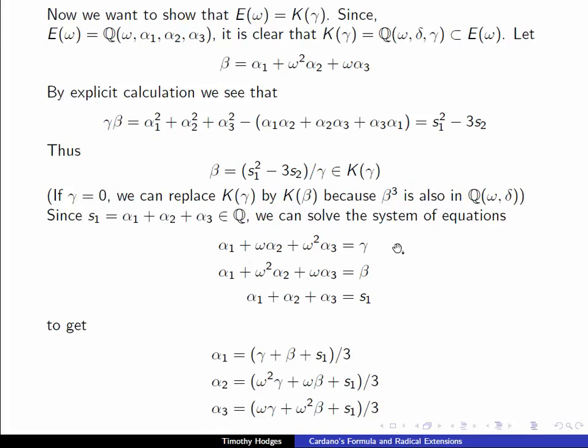Now we have a system of equations, throwing in also s₁ = α₁ + α₂ + α₃. We have a system of equations in the unknowns α₁, α₂, α₃, which we can solve. And this gives us formulas for the roots. α₁ is (γ + β + s₁)/3, etc. So in particular, this certainly tells us that the roots lie in K(γ). And so this proves that K(γ) is equal to E(ω).